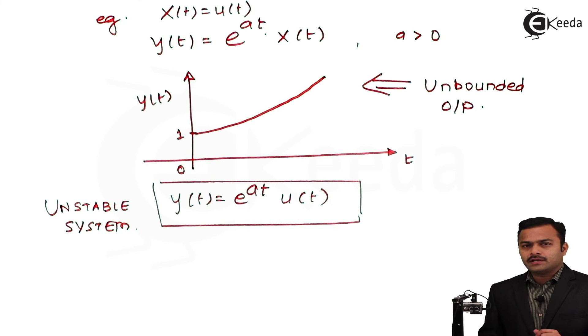For a stable system, if I am giving a fixed amount or fixed magnitude input, I should get a fixed amount of output only, without increasing as t tends to infinity. This is what a stable system is about. Thank you.